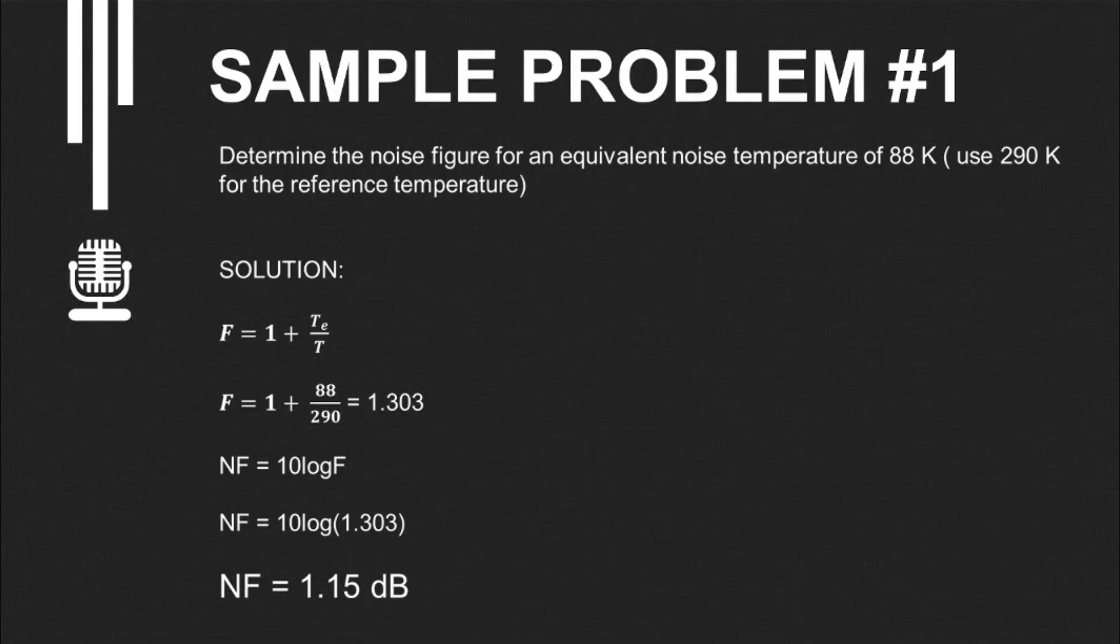The formula for finding the noise factor is 1 plus TE over T. We're looking for noise figure, but to get that, let's first use the formula for noise factor. So let's substitute the given: F equals 1 plus 88 over 290.